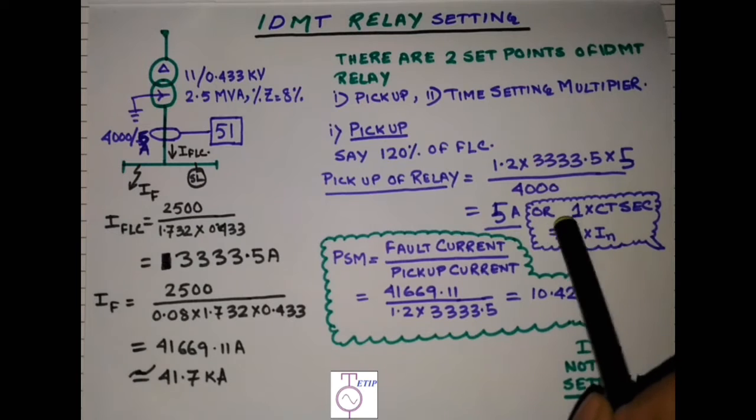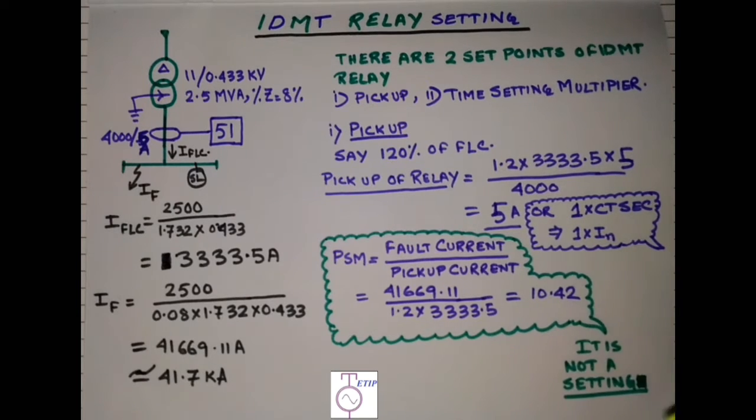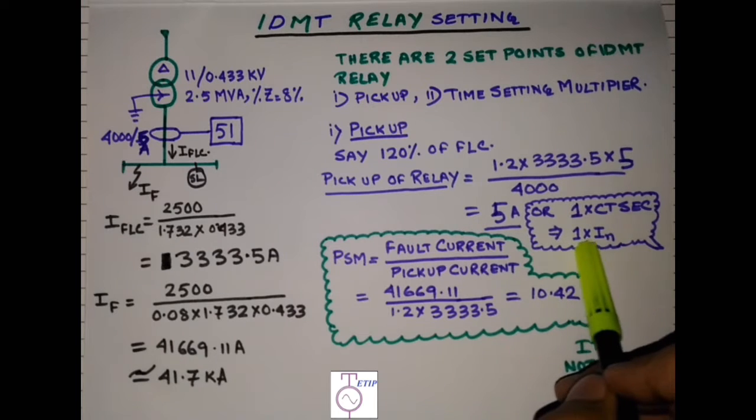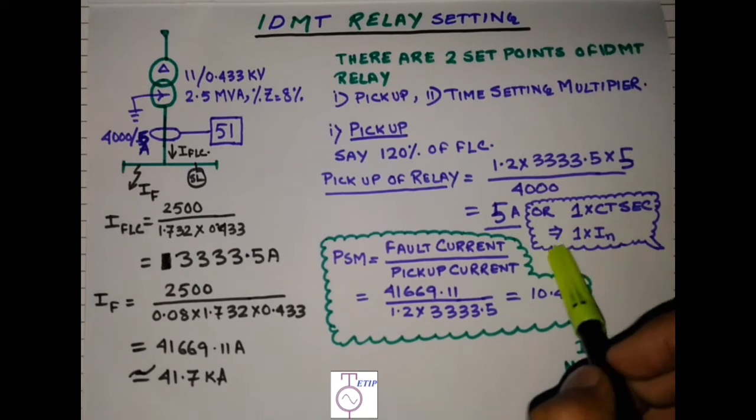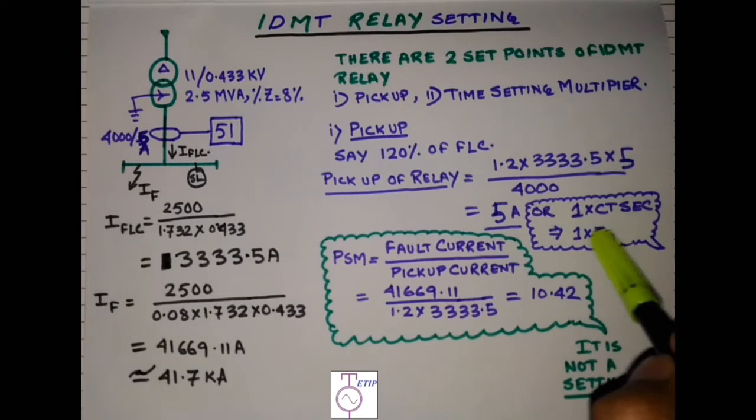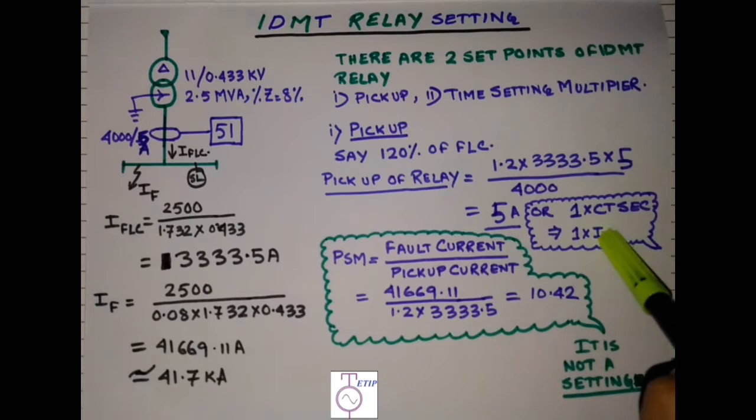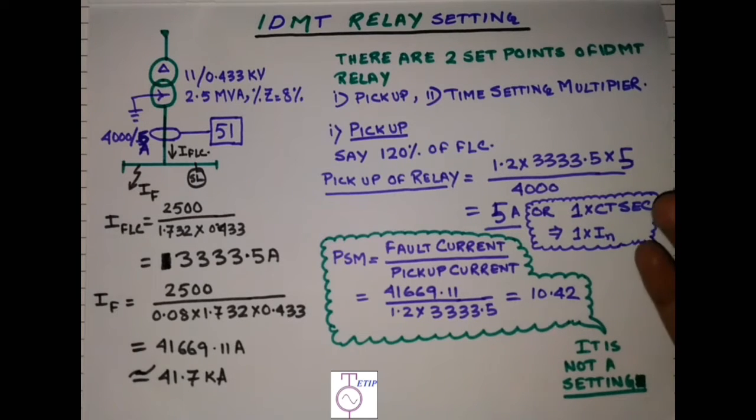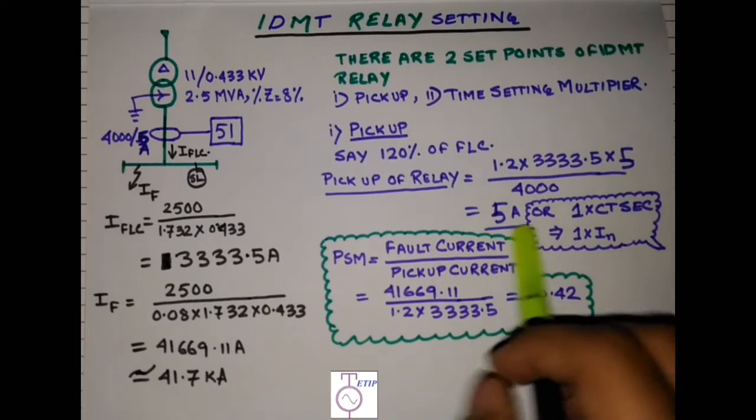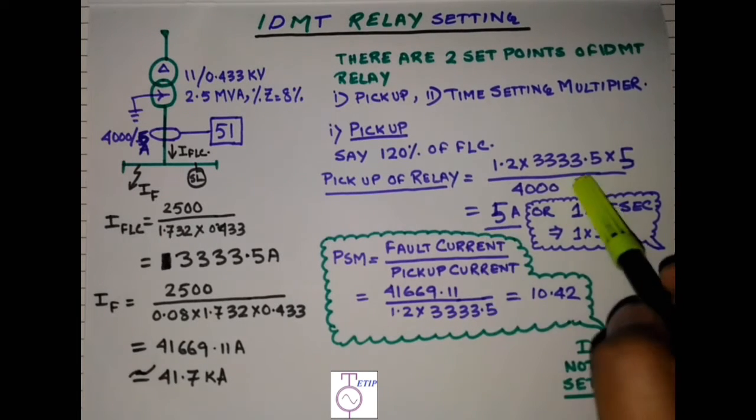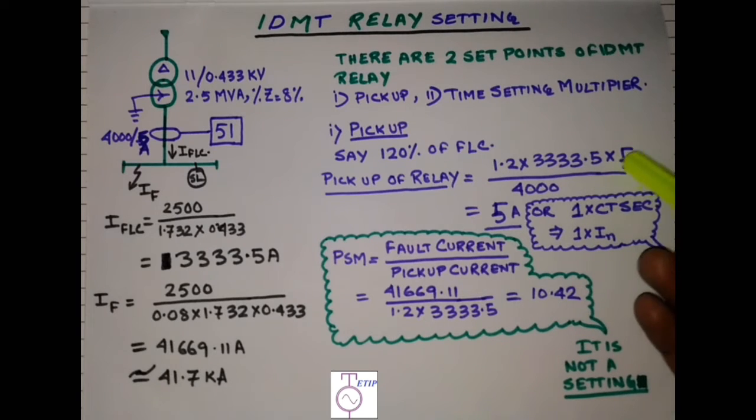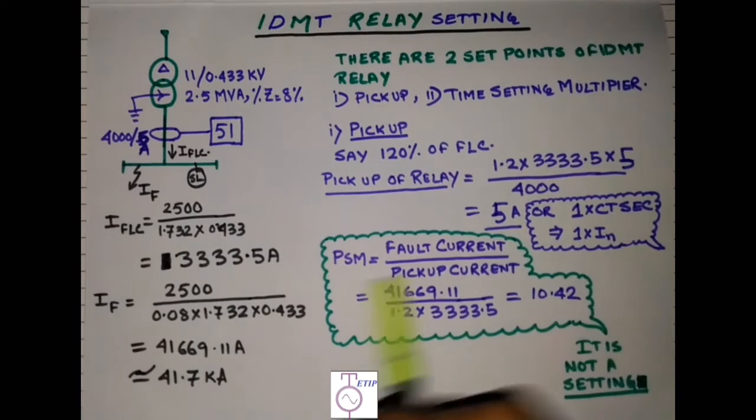Now interesting thing, you see that I have written another set point that is 1 into CT secondary or 1 into 1.2. In some relay manufacturers, they make their relay such that their pickups are set as 1 into CT secondary. So whatever the CT secondary or the relay rated current is, it's multiplied internally by the relay. So before setting any relay, please check the relay manufacturer catalogs whether they are allowing you to multiply the CT secondary or they have the inbuilt features to multiply the CT secondary inside their relay. Accordingly the set point will be changed.